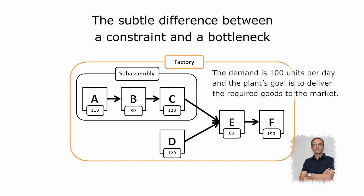According to definition, we'll find two bottlenecks: Resource B, which has a limited capacity of 80 units a day, and Resource E, limited to 60 units a day. Each of these two resources has lesser capacity than the daily demand.